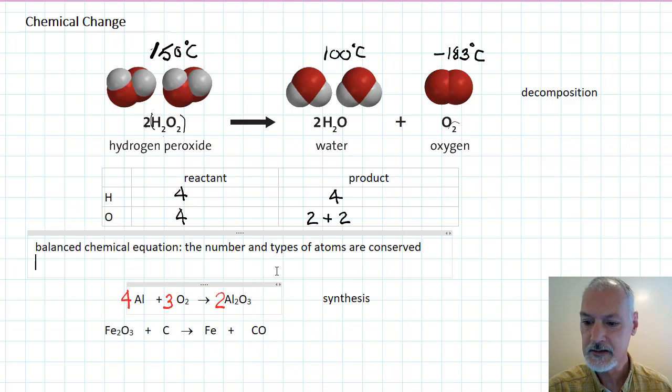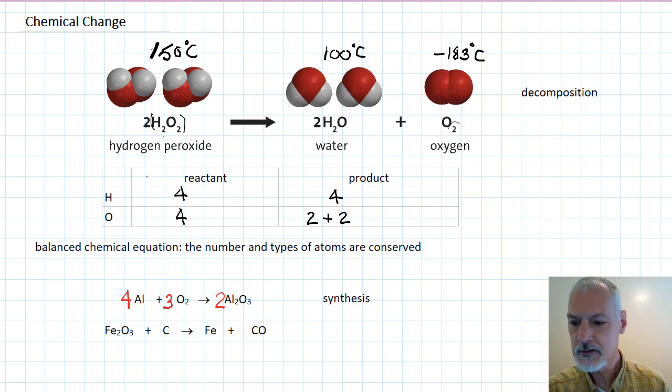Iron oxide and carbon combining to make iron and carbon monoxide. What we notice in this particular situation is that the carbon and iron have sort of switched places. The carbon was without a partner. In the products, the carbon is paired up now with the oxygen, and the iron is by itself.